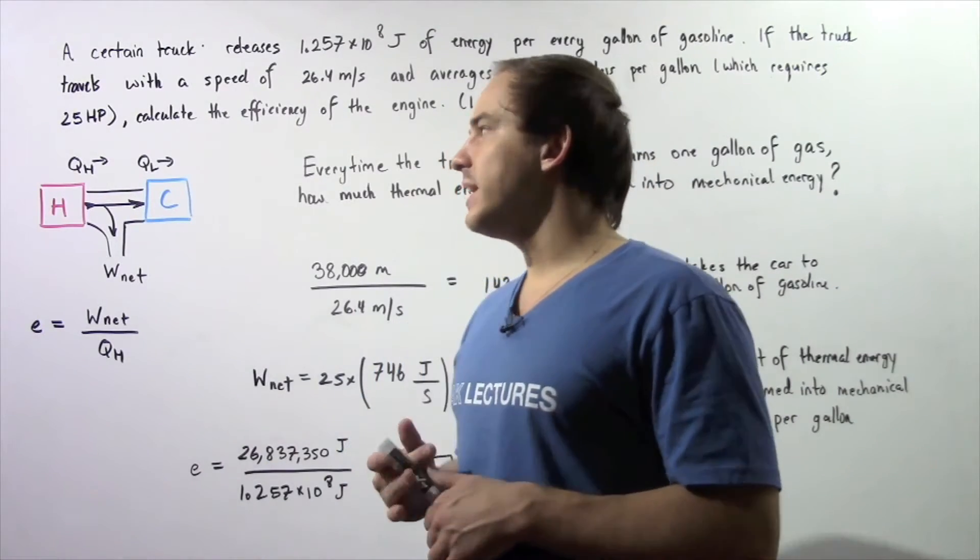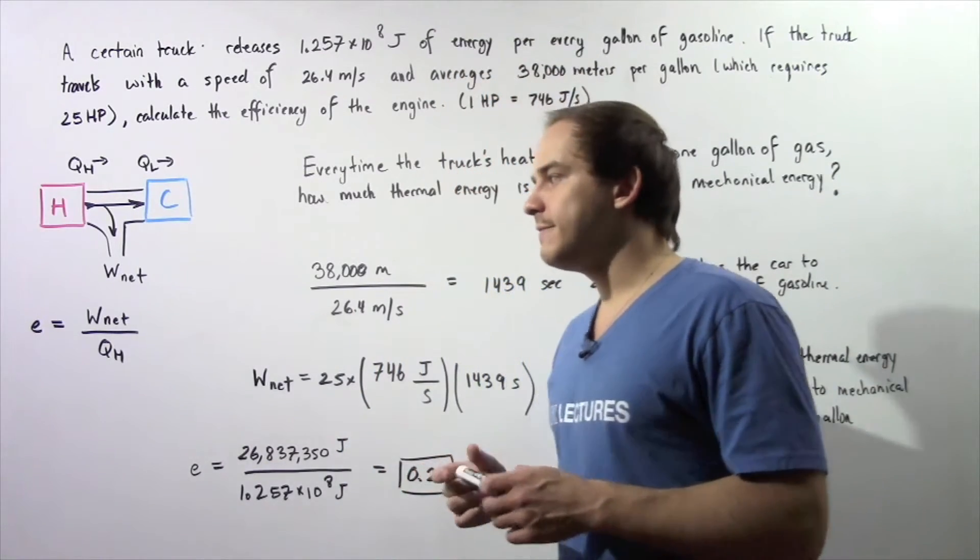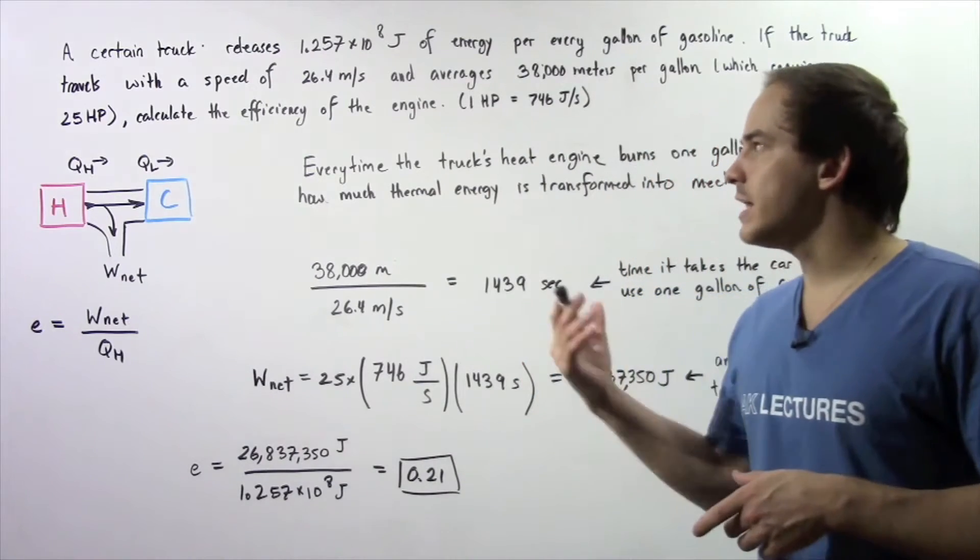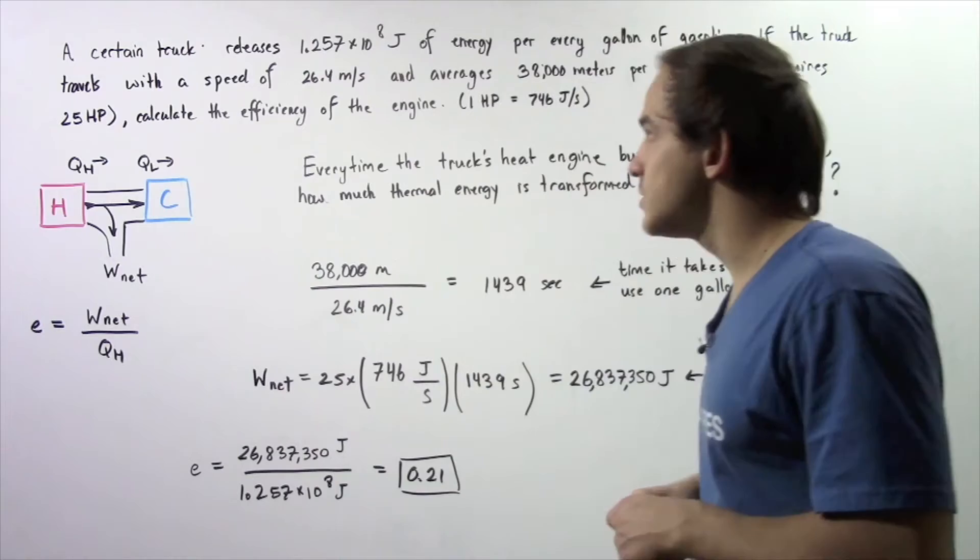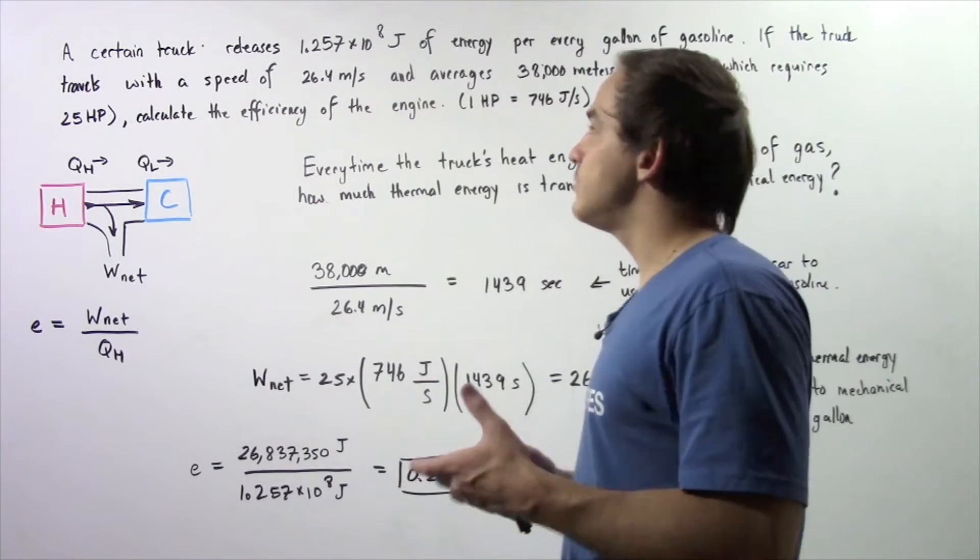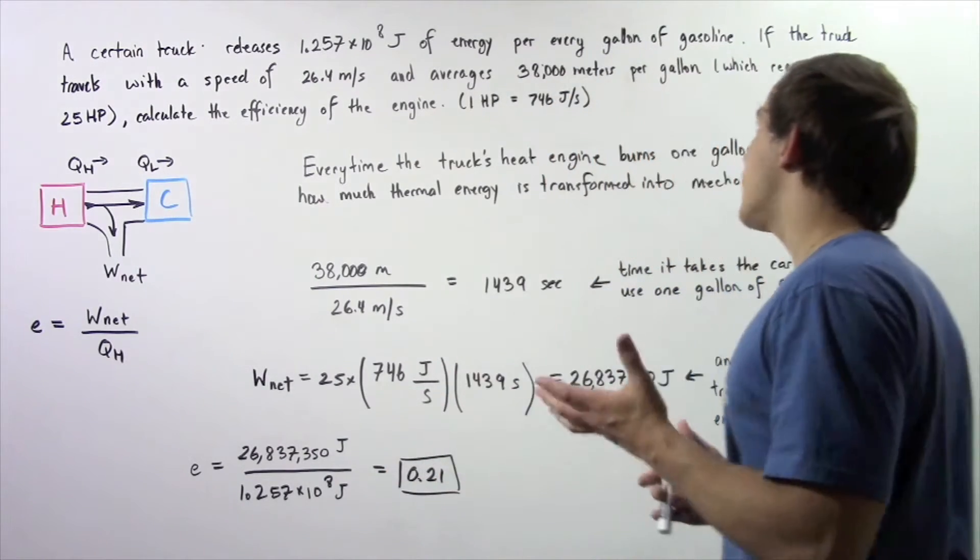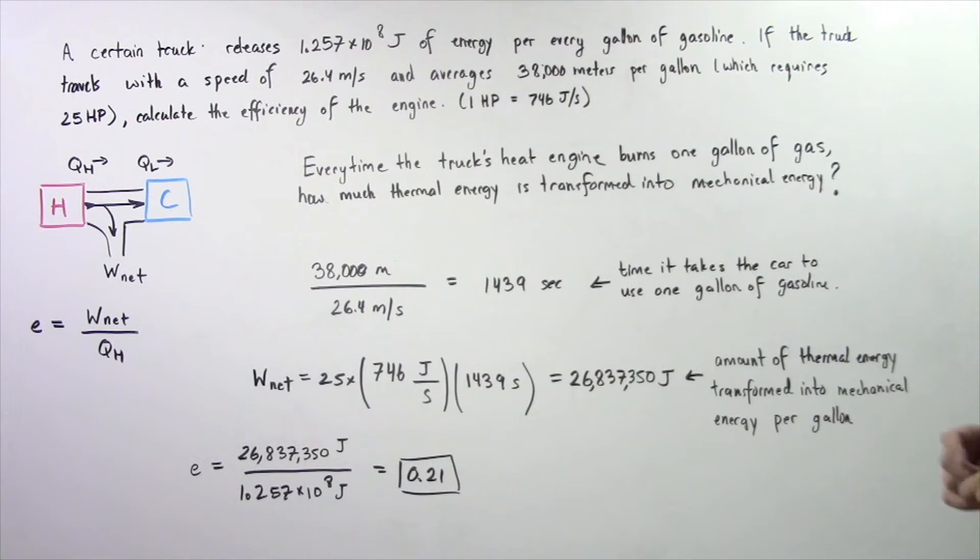Let's look at the following example in which we're going to calculate the efficiency of our heat engine inside our truck. Suppose a certain truck releases 1.257 times 10 to the 8 joules of energy per every gallon of gasoline that it burns.